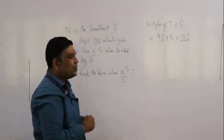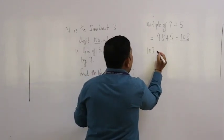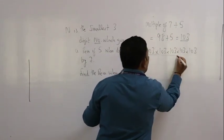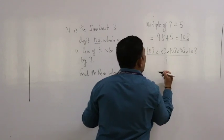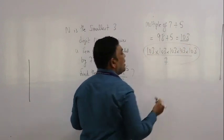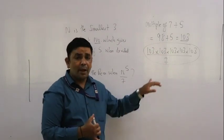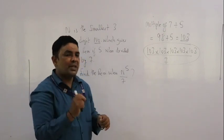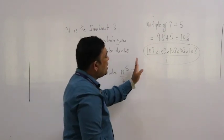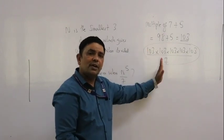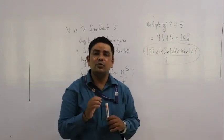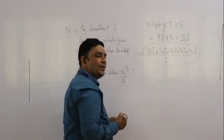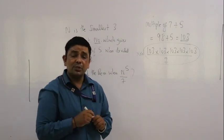The first approach is 103 to the power 103 to the power 103... divided by 7 — we try to find the remainder for this expression. I'm not going to do this here. What should be appreciated is that if a student starts down this path, they are definitely going to spend a lot of time, so this approach is not advisable.